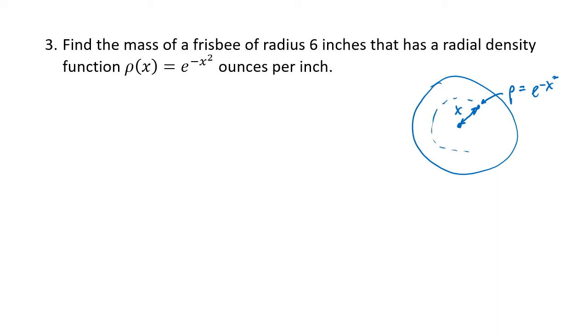Our mass is given by the formula, the integral from zero, since we're starting at the center of the disk, to r, the radius of the disk, of 2 pi times x times rho of x. So that comes from the fact that the circumference of a circle is 2 pi r, and we worked through the derivation of that formula in the lecture. So let's plug in our formula. Our radius is 6, so this is an integral from 0 to 6, 2 pi times x, and rho of x is e to the minus x squared, and so that's our integral.